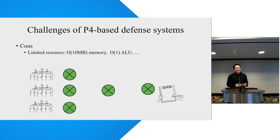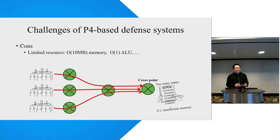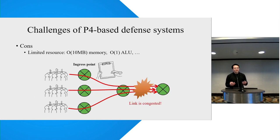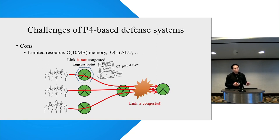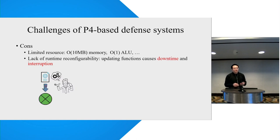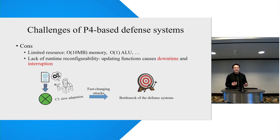With these advantages, P4 switches also have some limitations. First, P4 switches only have limited memory. To maintain line speed, they need to use fast and expensive memory such as SRAM, so we cannot store too many states on the P4 switch. Besides, if we let the P4 switch store only part of the network state, the switch has only a partial view of the network, making it difficult to counter complex attacks such as the crossfire attack — which concentrates packets from multiple ingress points on a certain link, requiring a complete network view. Third, current P4 switches do not support runtime reconfiguration. Whenever we need to update the function on a P4 switch, the switch needs to be interrupted, causing non-negligible downtime. This slow adaptation problem can become a key bottleneck if attackers change their attack vector quickly.